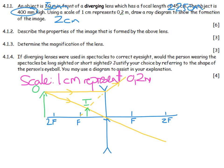You are then expected to find out the properties of that image. It is diminished. In other words, it is smaller. It is upright. In other words, it is not upside down. And because of the dotted line, it is virtual.